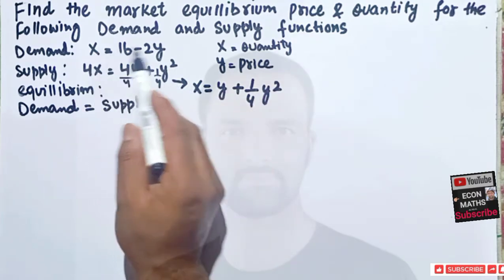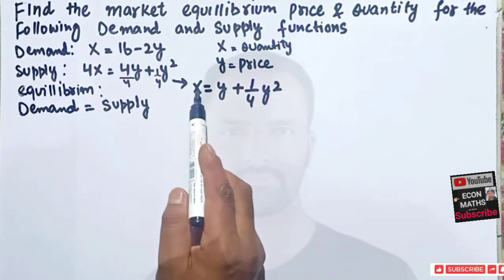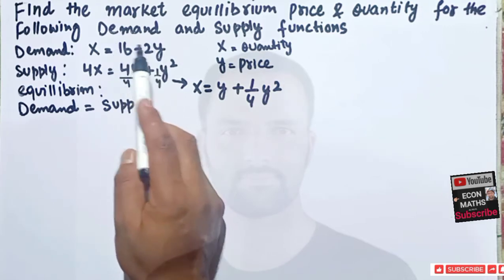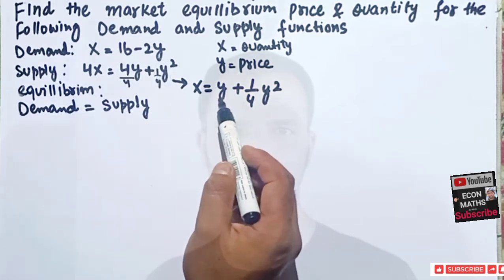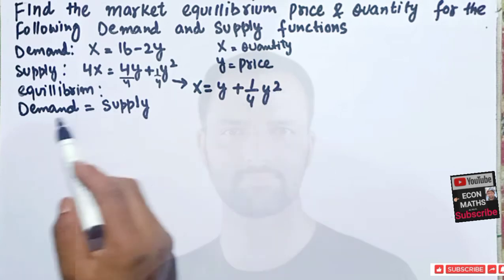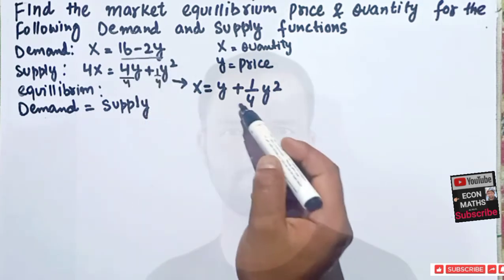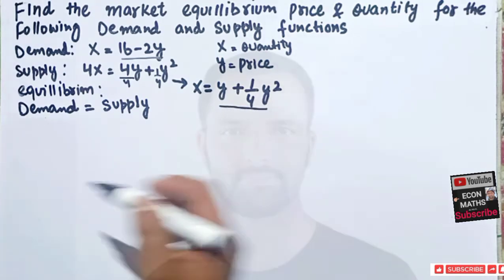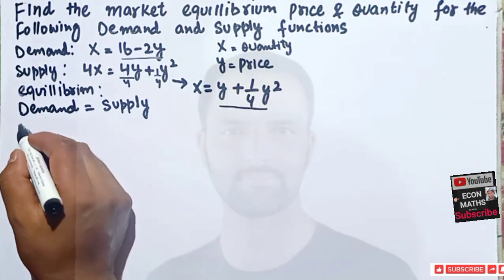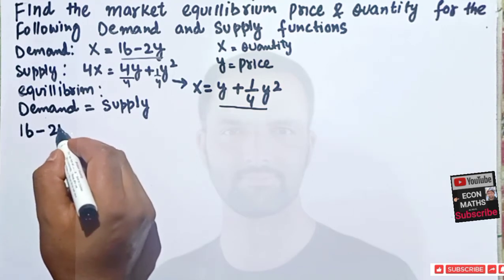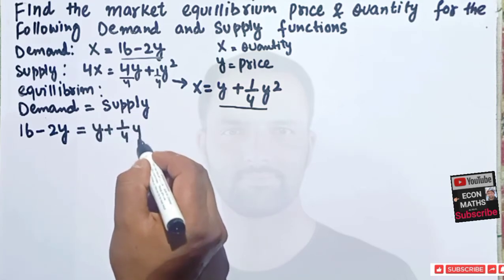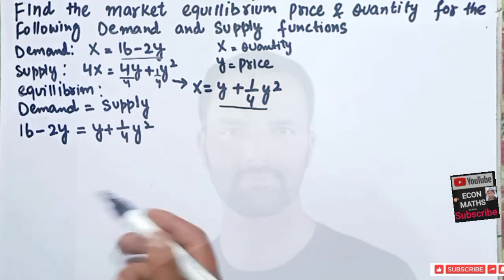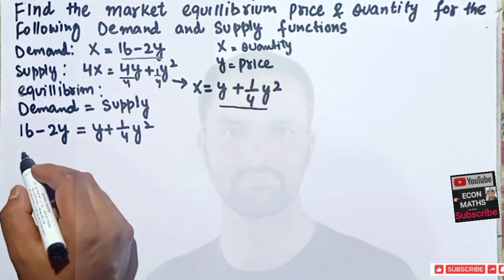So our supply function is X = Y + (1/4)Y², and our demand function is X = 16 - 2Y. Both have X on the left-hand side, so we equate the right-hand sides. Setting demand equal to supply: 16 - 2Y = Y + (1/4)Y².